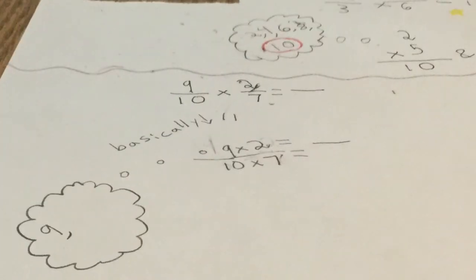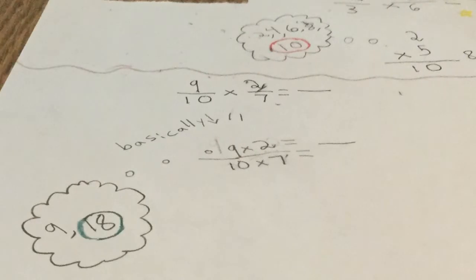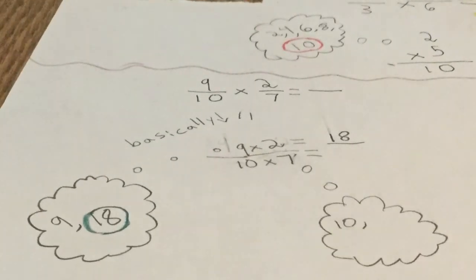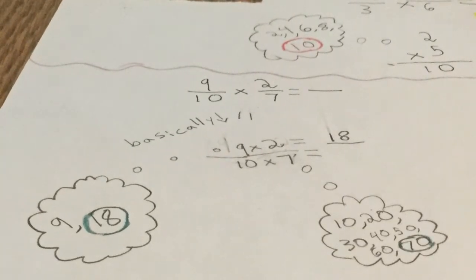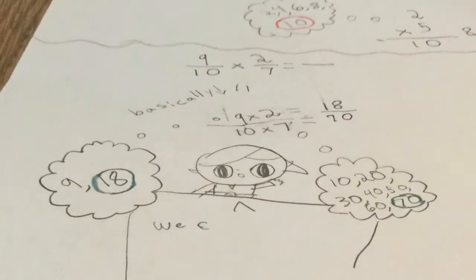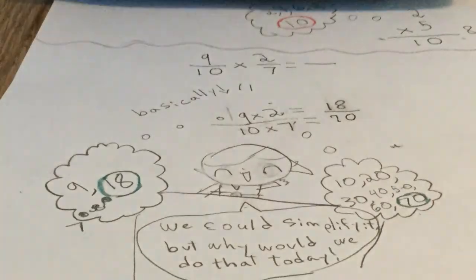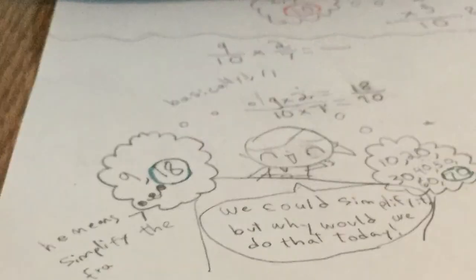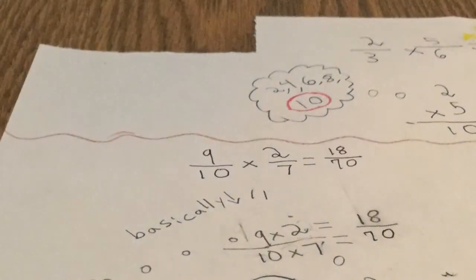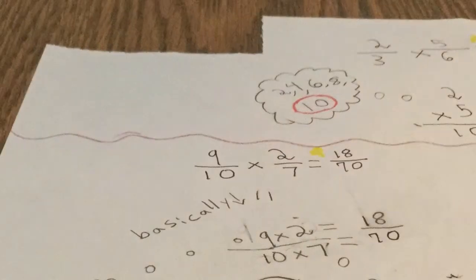Okay. Nine times two is eighteen, and ten times seven is seventy, of course. So our answer is eighteen-seventieths. We could simplify it, but why would we do that today? He means simplify the fraction. Our answer is eighteen-seventieths. Thank you.